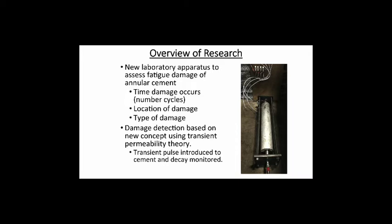We calculate a permeability after every set of pressure cycles so we can see the trend line as pressure cycles occur in the cement. We're not calculating a material property of the cement, so we're calling it 'point source reference permeability.' The reason is that it's applied with a point source, which is different from normal permeability measurements done with flow across a known area. It's also a reference permeability in that it's only useful when you have other permeabilities in the trend line to compare it to.